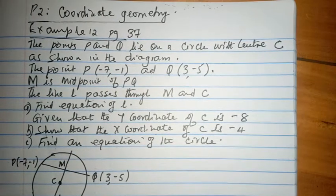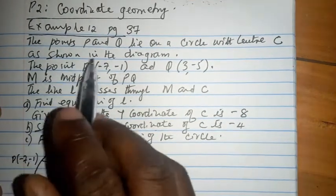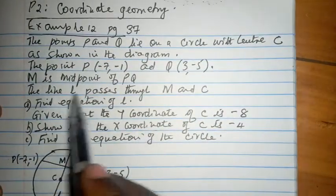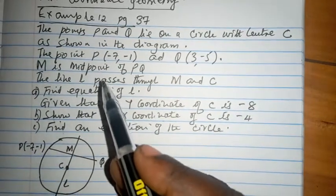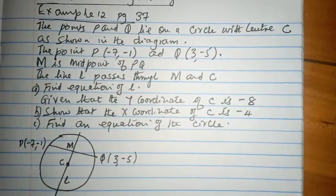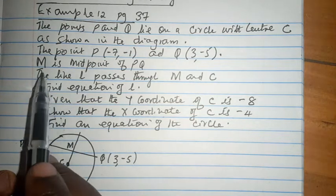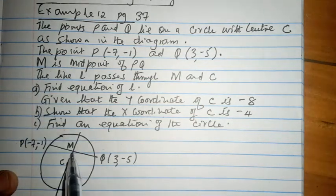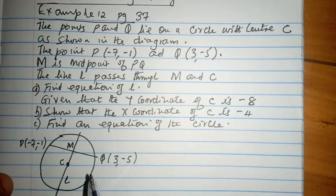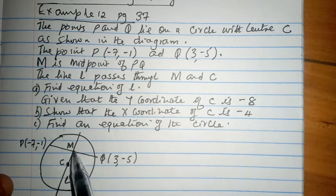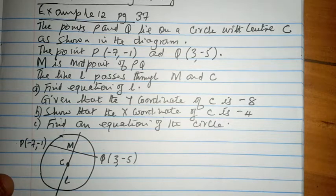The question says: the points P and Q lie on a circle with center C, as shown in the diagram. P and Q lie on the circle with center C. Q has coordinates (-7, 1) and (3, -5) respectively, and M is the midpoint of PQ. The line L passes through M and the center of the circle C.